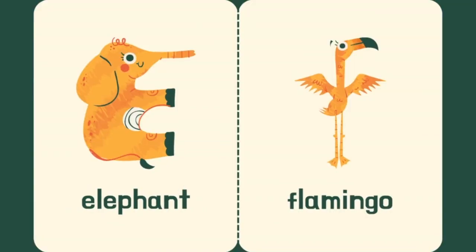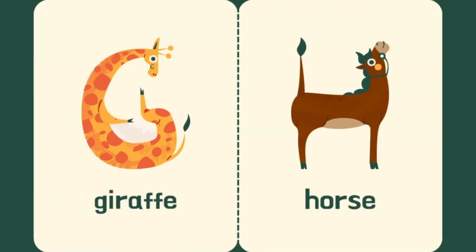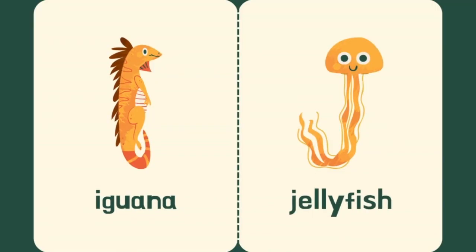E is for Elephant. F is for Flamingo. G is for Giraffe. H is for Horse. I is for Iguana.